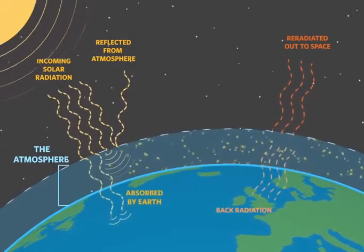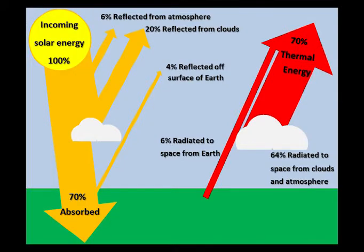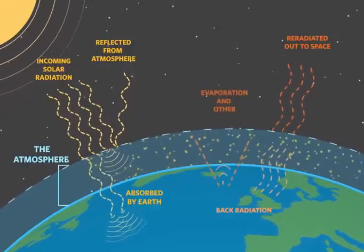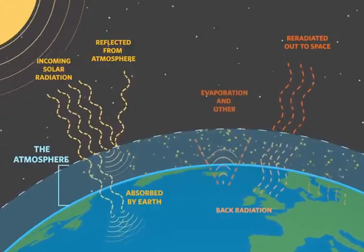Due to reflection by the atmosphere, clouds, and Earth's surface, we can approximate that 70% of the solar energy incident on the edge of the Earth's atmosphere is actually absorbed by the Earth. Energy absorbed by the Earth is not the same as the energy incident on the Earth's surface. On a clear or cloudless day when the Sun is directly over your head at the zenith, solar irradiation is still reduced due to absorption and reflection by particles in Earth's atmosphere.